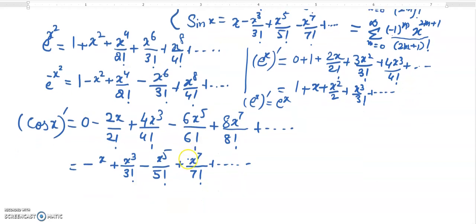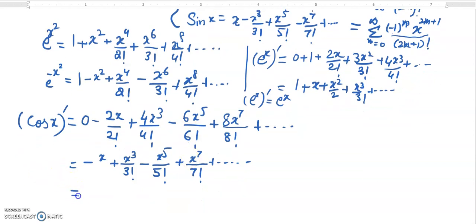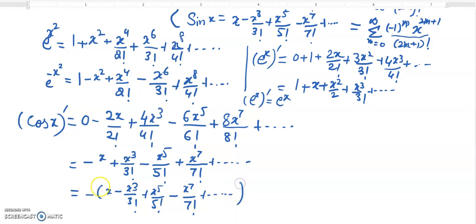Now if we take minus as common, we get minus times (x minus x cubed over 3 factorial plus x^5 over 5 factorial minus x^7 over 7 factorial). What is in the bracket is exactly the same as the series for sin(x), so this equals minus sin(x).